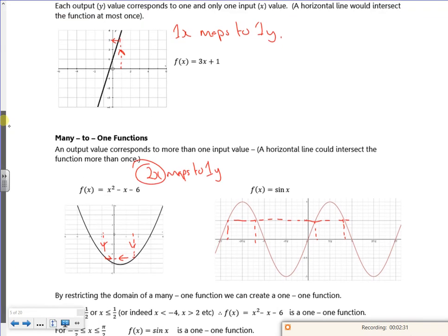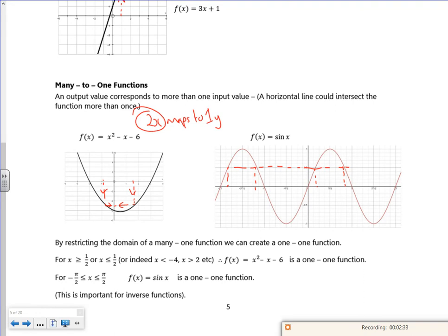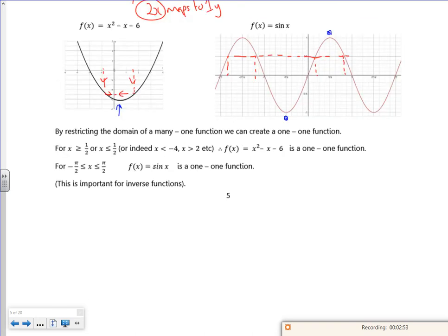So I can restrict the domains, I can make them so they're one-to-one. So with this quadratic one, I can chop it off at the vertex there and make it a one-to-one. With the sine graph, I could chop it, say, between here and here and cover all the y values once. And that's what creating a one-to-one function is.